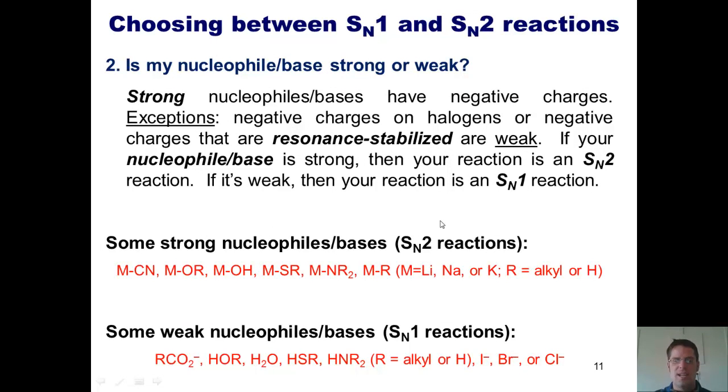The strong guys, once again, are going to be the very reactive guys that will come in and kick off a leaving group in one step, SN2, whereas the weak guys are going to be the guys who will wait around for the leaving group to take off and form a carbocation intermediate, and then they'll come in and react. I guess I'll attack that carbocation intermediate like that. Strong is SN2. Weak is SN1.